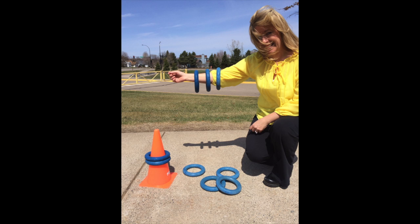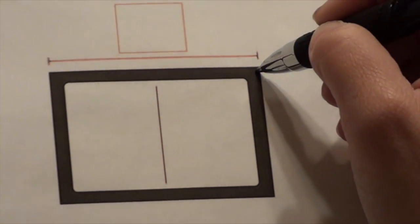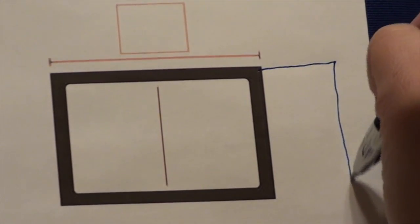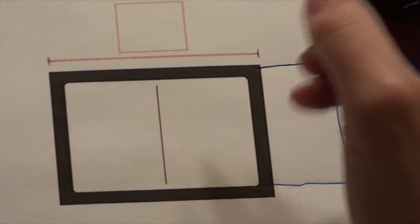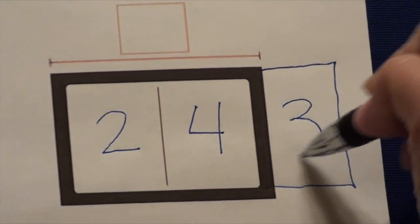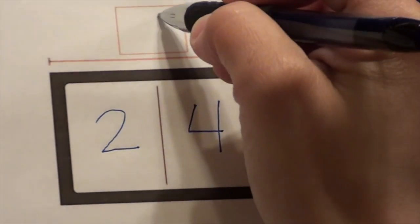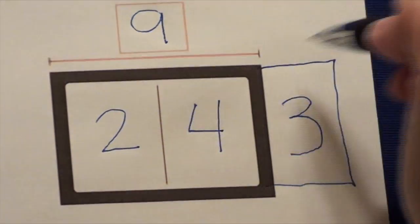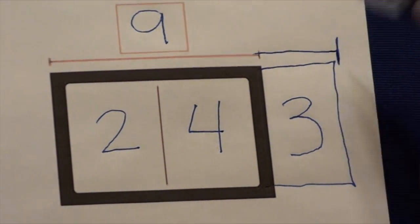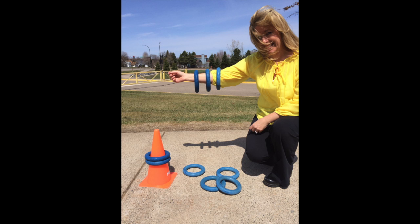Sometimes there are multiple add-ins, or more than two numbers to add. When this happens, all you have to do is add on another part box. Mrs. Johnson adds up the parts: two on the cone, four on the ground, and three on her arm. The whole is two plus four plus three. The whole is nine. She has nine rings all together.